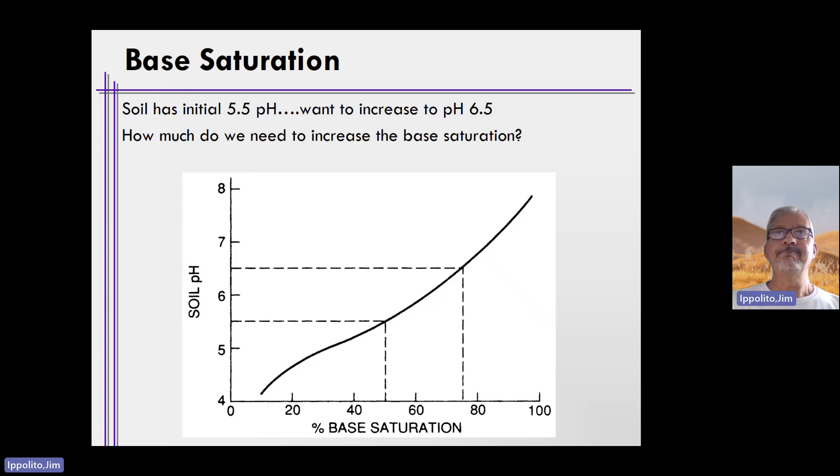Let's say soil has an initial pH of 5.5 and we want to increase the pH to 6.5. How much do we need to increase the base saturation by? We need to increase it, according to this figure, from pH 5.5 to 6.5. We want to go from about 50% to 70%. So we need to increase it by 20%.